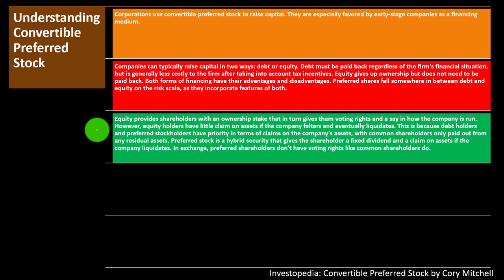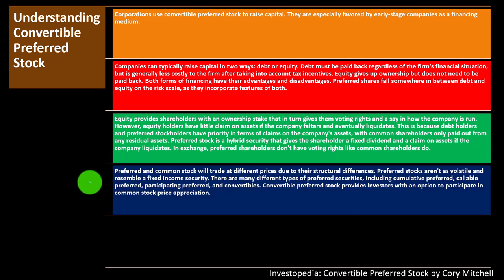In exchange for these benefits, preferred shareholders don't have voting rights like common shareholders do. Preferred and common stock trade at different prices due to their structural differences. Preferred stocks aren't as volatile, resembling a fixed income security. Common stock, by contrast, will see more peaks and dips as it reflects the perceived overall valuation of the company, whereas preferred stock is closer to a fixed income instrument and therefore acts more like a bond.